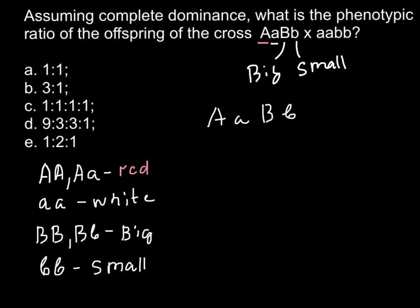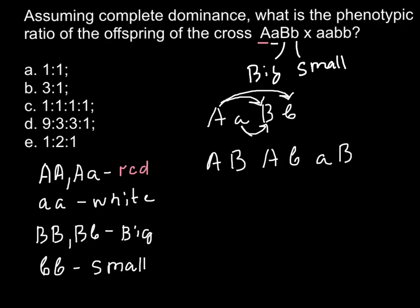Let's count how many different combinations are possible. There can be four combinations: capital A capital B, capital A small b, small a capital B, and small a small b. This is Parent 1. As for Parent 2, only one combination is possible — small a small b — regardless of which allele we pick. So we put this variant on the side: small a small b. This is the only combination possible for the second parent.